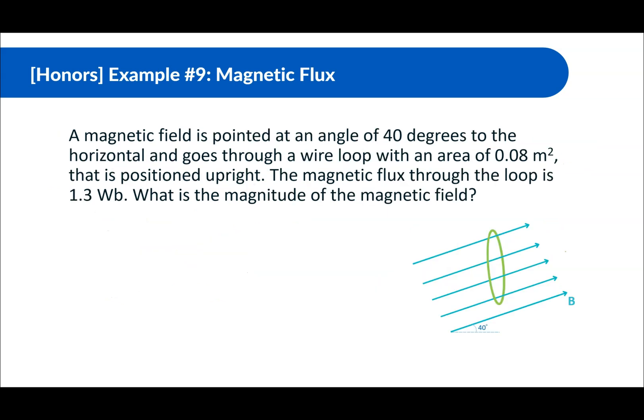All right, moving on, I believe this is the last one. A magnetic field is pointed at an angle of 40 degrees to the horizontal and goes through a wire loop with an area of 0.08 meters squared that is positioned upright. The magnetic flux through the loop is 1.3 Weber. What is the magnitude of the magnetic field? Okay, what is the magnitude?